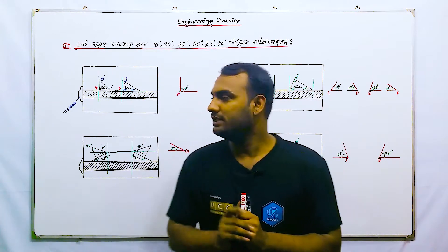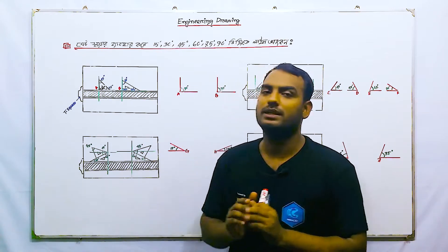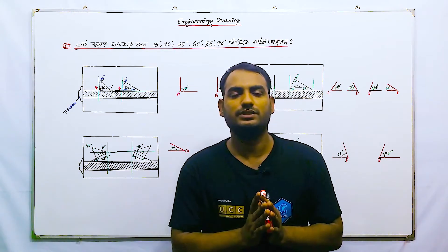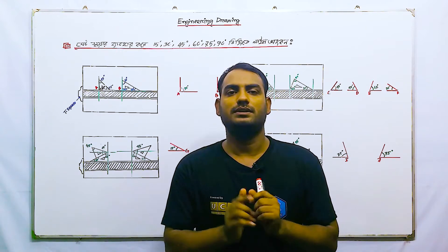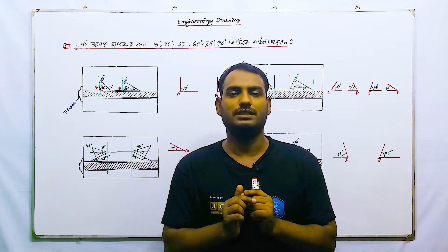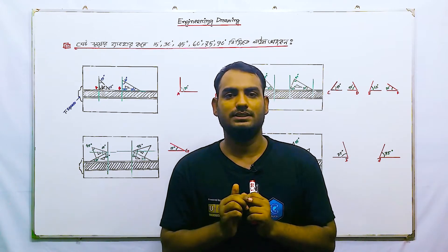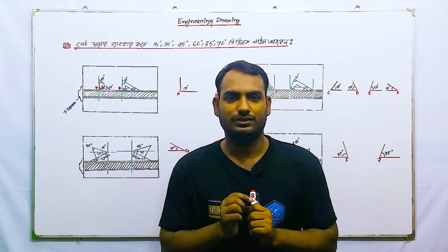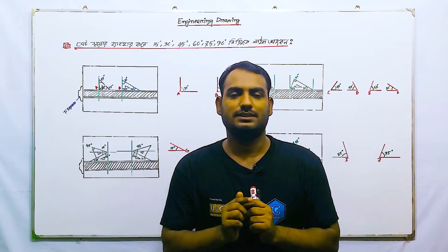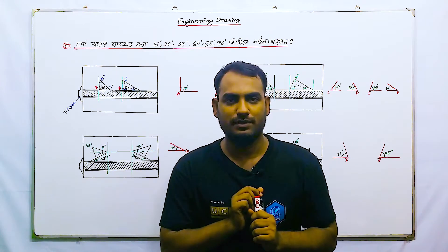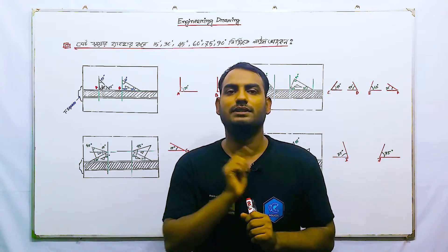This is T-square and S-square. I am going to demonstrate 15 degree, 30 degree, 45 degree, 60 degree, 75 degree.